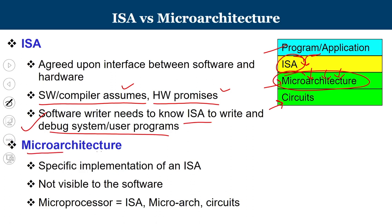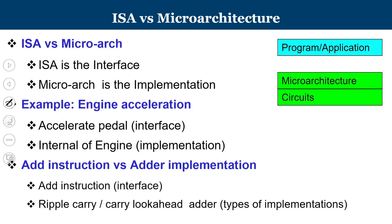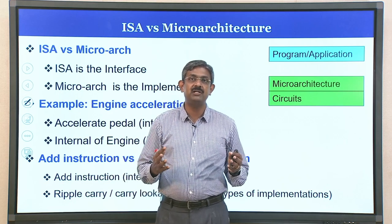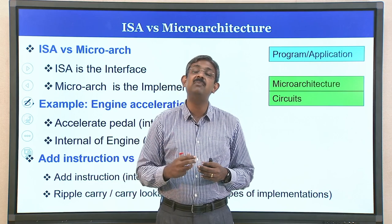Micro-architecture specifies the implementation of an ISA. It is not visible to software. A microprocessor consists of an instruction set architecture, the micro-architectural features, and the circuits that implement those micro-architectural features. In short, ISA is the interface that needs to be known to users, and micro-architecture is the implementation of that particular ISA.